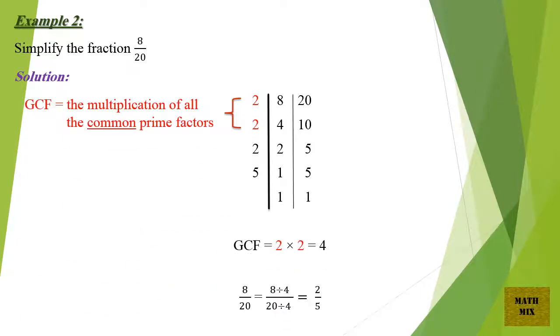GCF equals 2 times 2 which equals 4. So 8 over 20 equals 8 divided by 4, over 20 divided by 4, which equals 2 over 5.